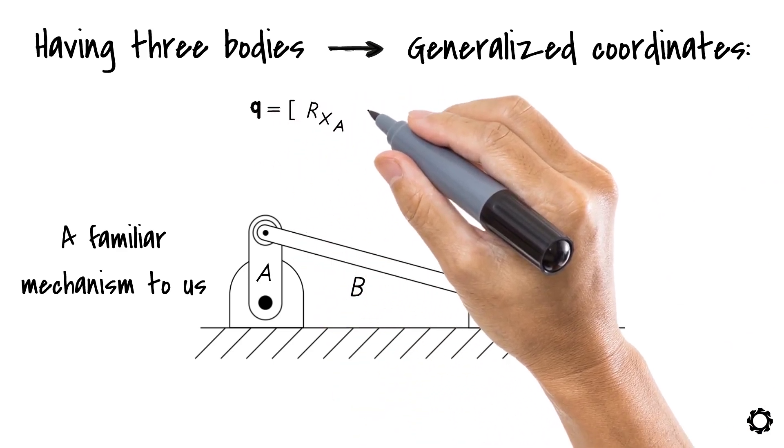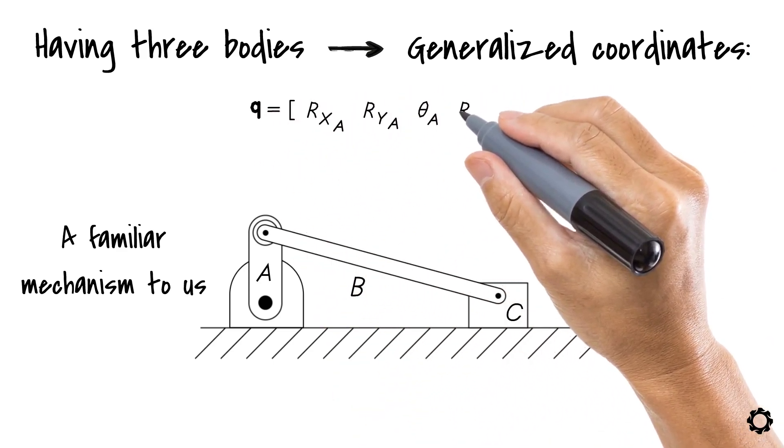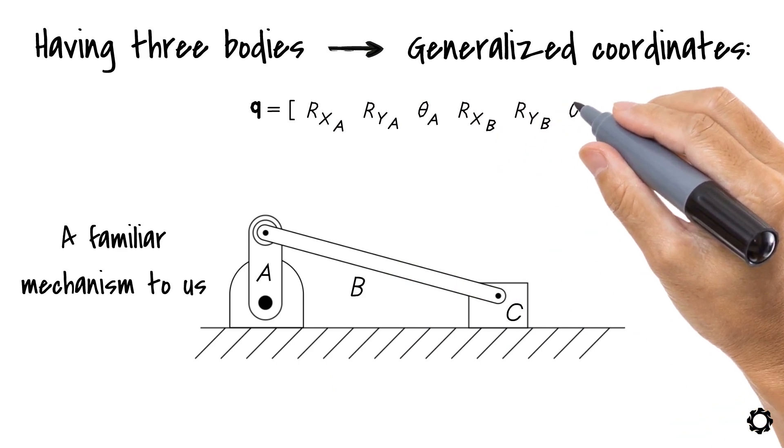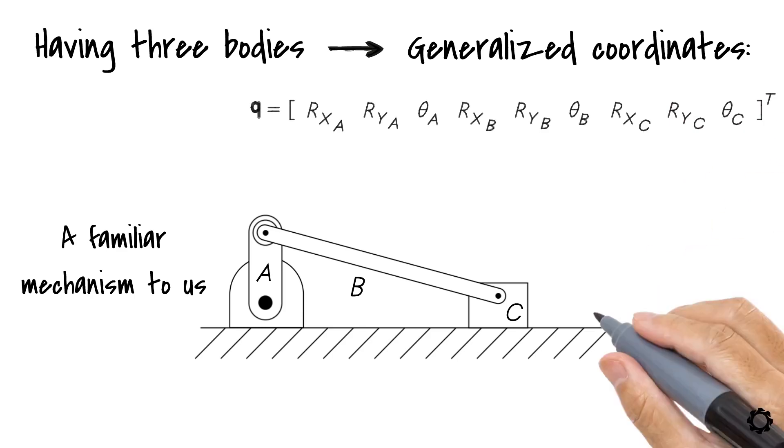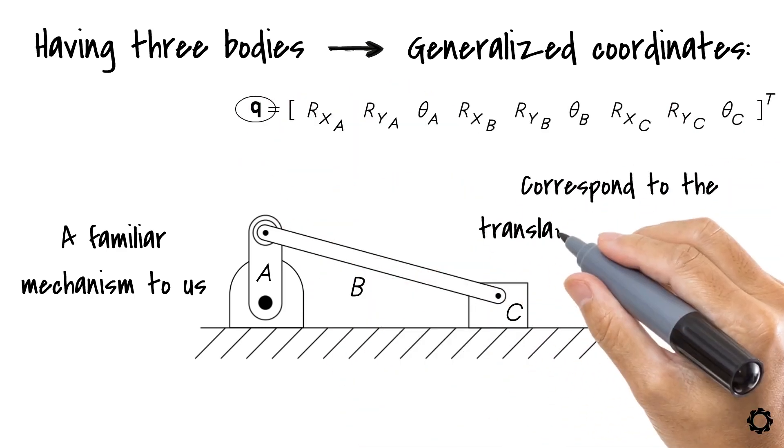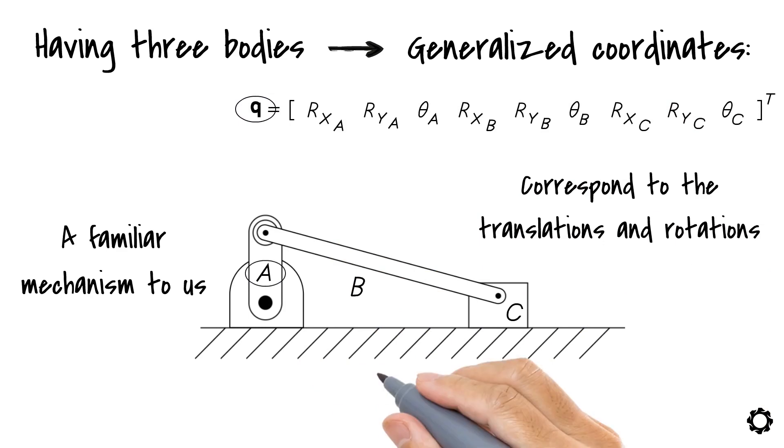q equals rxA, ryA, θA, rxB, ryB, θB, rxC, ryC, θC transpose. These generalized coordinates correspond to the translations and rotations of the three bodies that conform to our crankshaft mechanism.